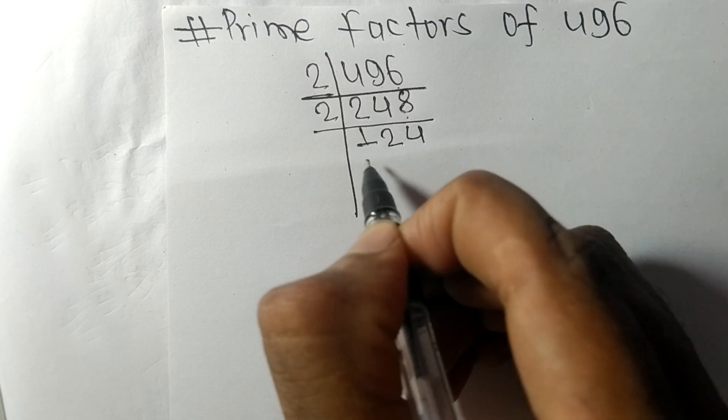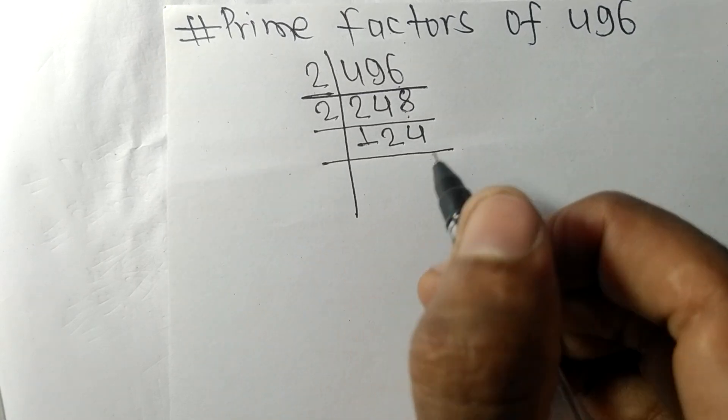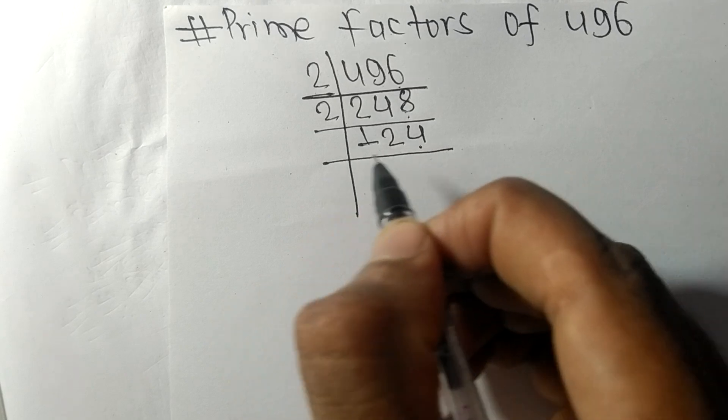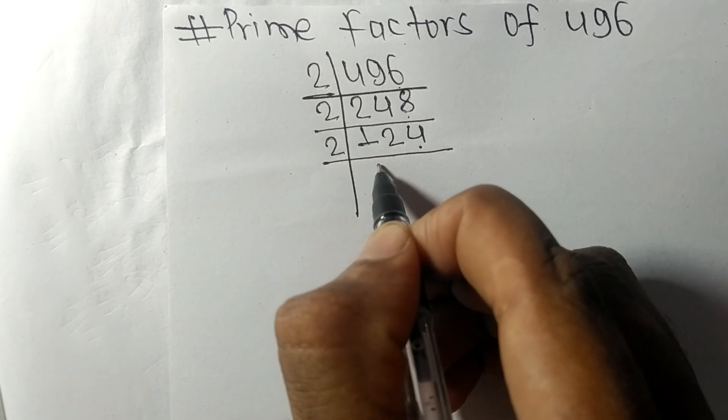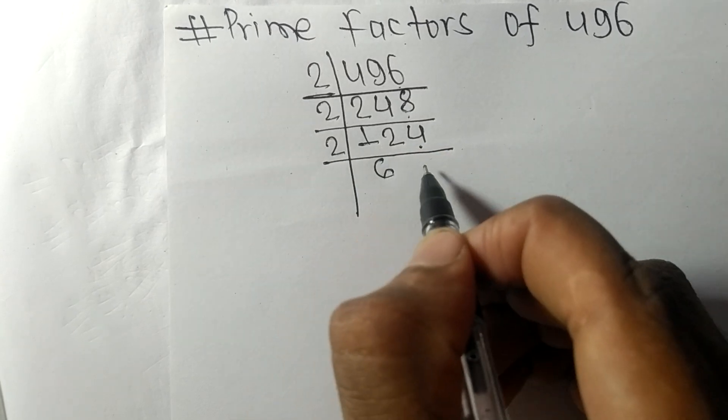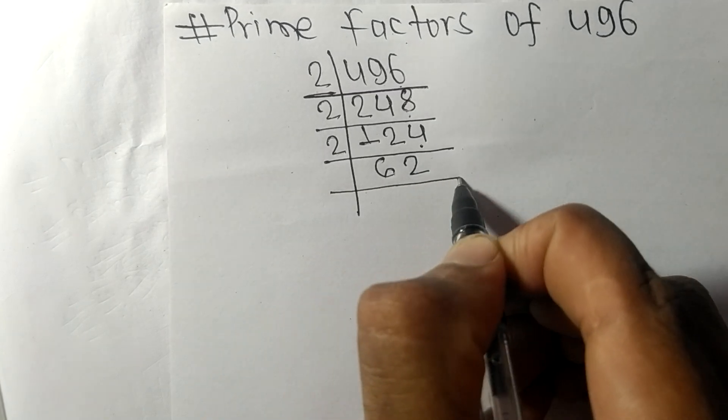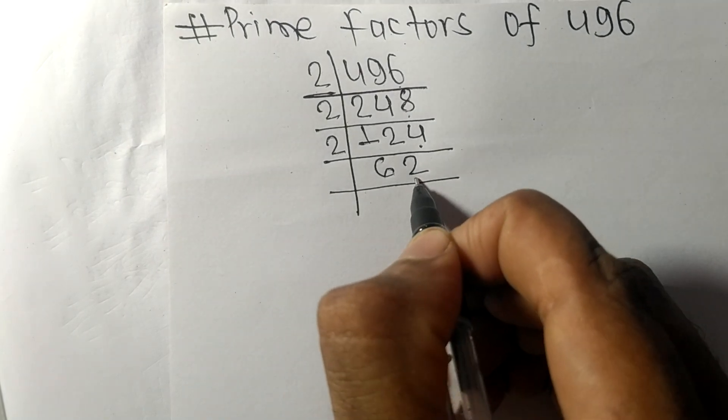Two times 6 is 12, two times 2 is 4. Again we have even number 2 at last, so it is divisible by 2.